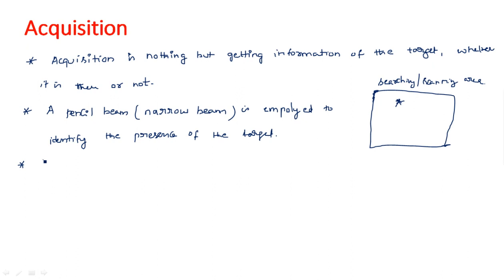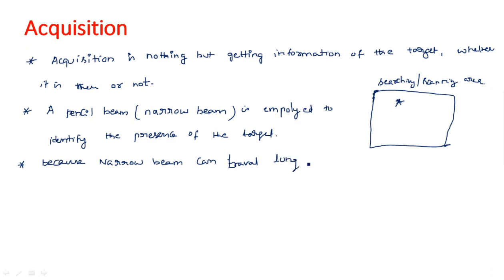Because a narrow beam has the ability to travel a long distance, whereas a wide beam cannot travel as far. That is why we are using a narrow beam instead of a wide beam.